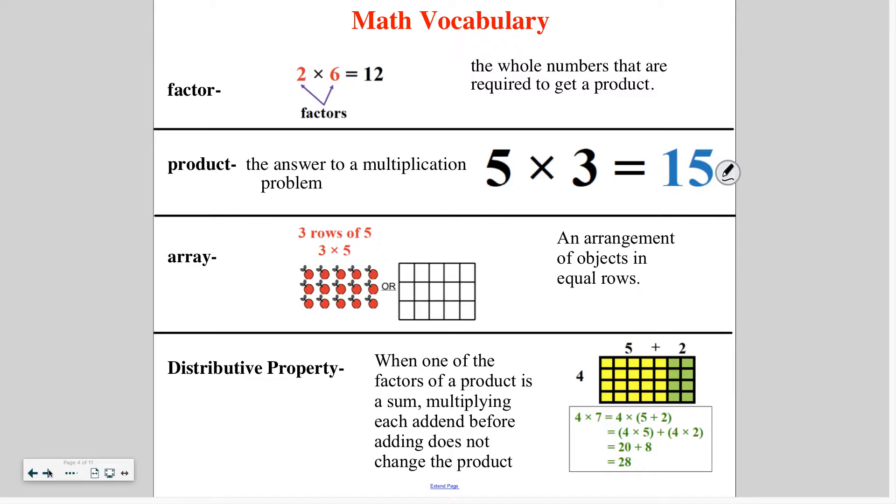Let's go over our vocabulary. A factor are just the numbers that you're multiplying to get the answer and that answer is called the product. So factor times the factor gives me the product. An array is just an arrangement of objects in equal rows. So here both of these are arranged in three rows of five. This first one is using fruits, the second one is using boxes, but they both represent three rows of five or the expression three times five.